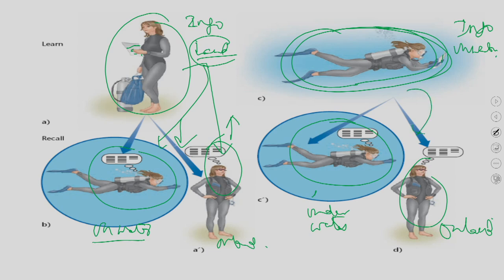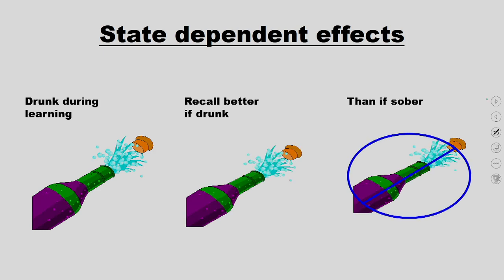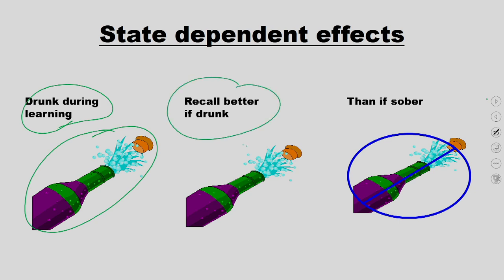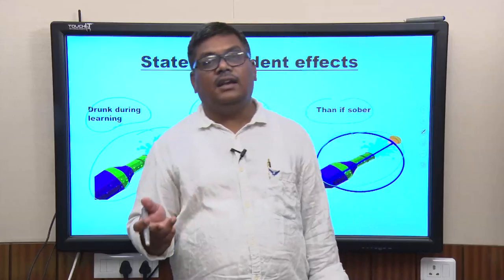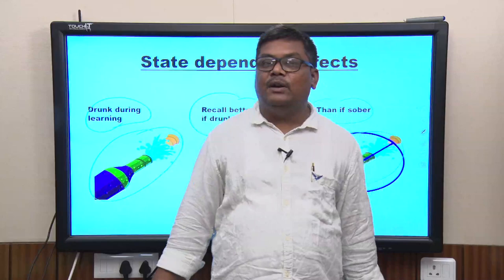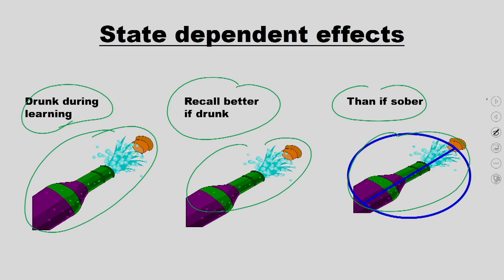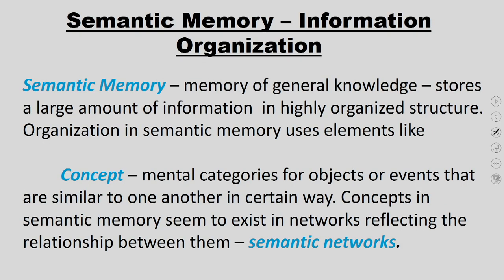There are also state-dependent effects. Certain physiological states are responsible for how information is learned and retrieved. For example, if you learn something when you are drunk, you recall it better when you are drunk than when sober. Some people say things when drunk that they do not remember sober — certain body physiological states code that kind of information.